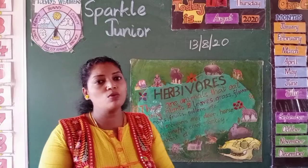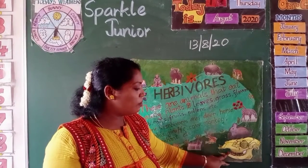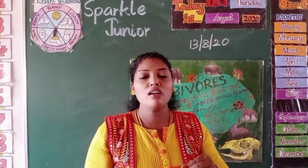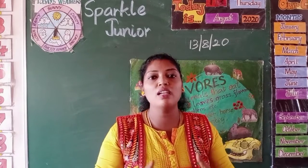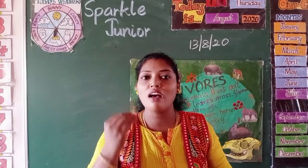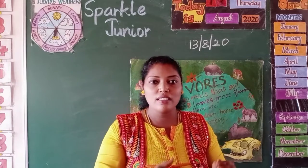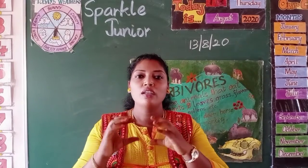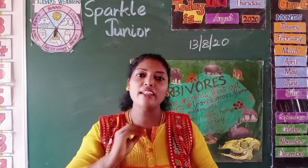Now, what special features do herbivores animals have? Their teeth are flat. You can see the skull of the herbivores animal — these are the teeth. Their teeth are designed in a flat shape so that they can easily chew green leaves, grasses, or vegetables. Herbivores animals have flat teeth, just like the flat teeth we have in the front of our mouths, which help them chew and grind leaves, fruits, vegetables, and flowers.